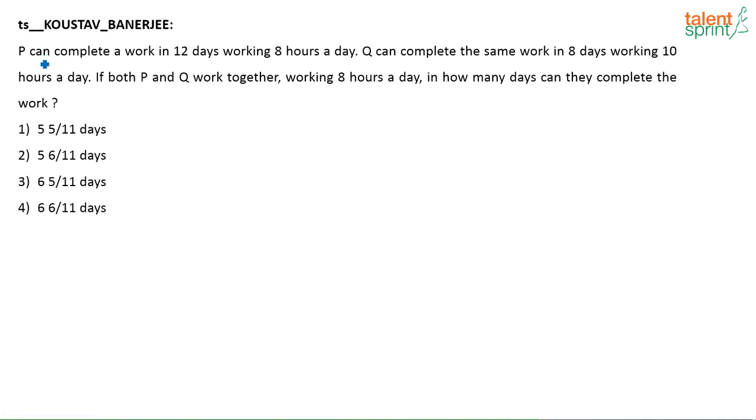Now let us look at this question. P can complete a work in 12 days working 8 hours a day. For how many hours is P working to complete the work? 12 days, every day working for 8 hours. So for 96 hours P is working to finish the job.